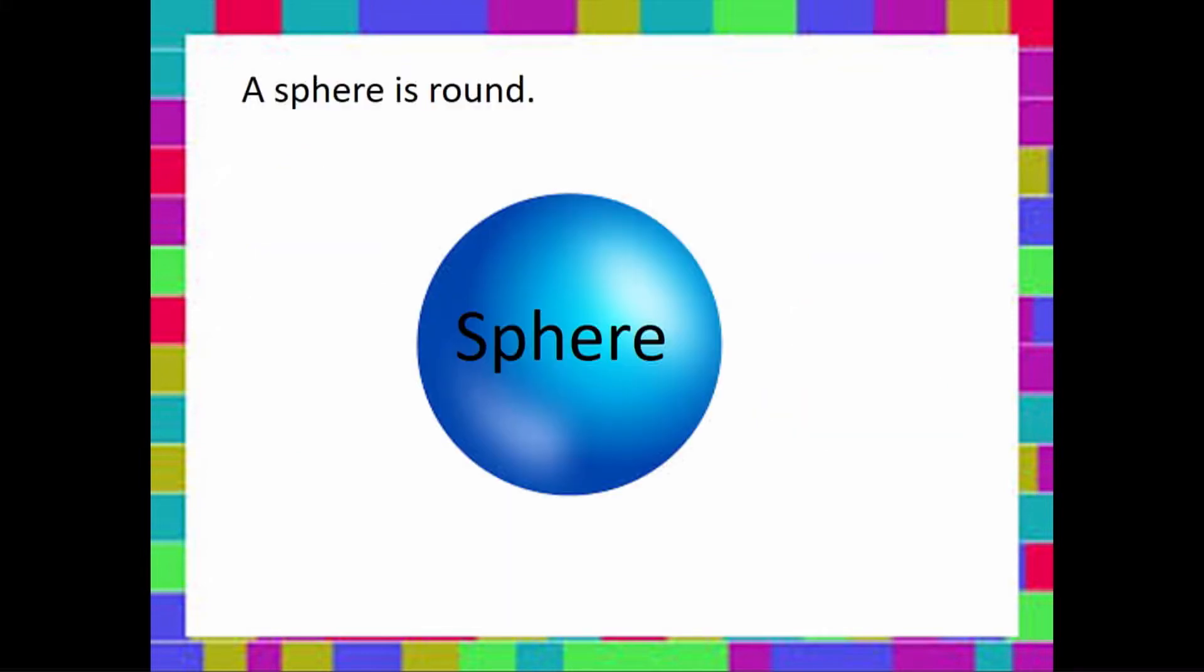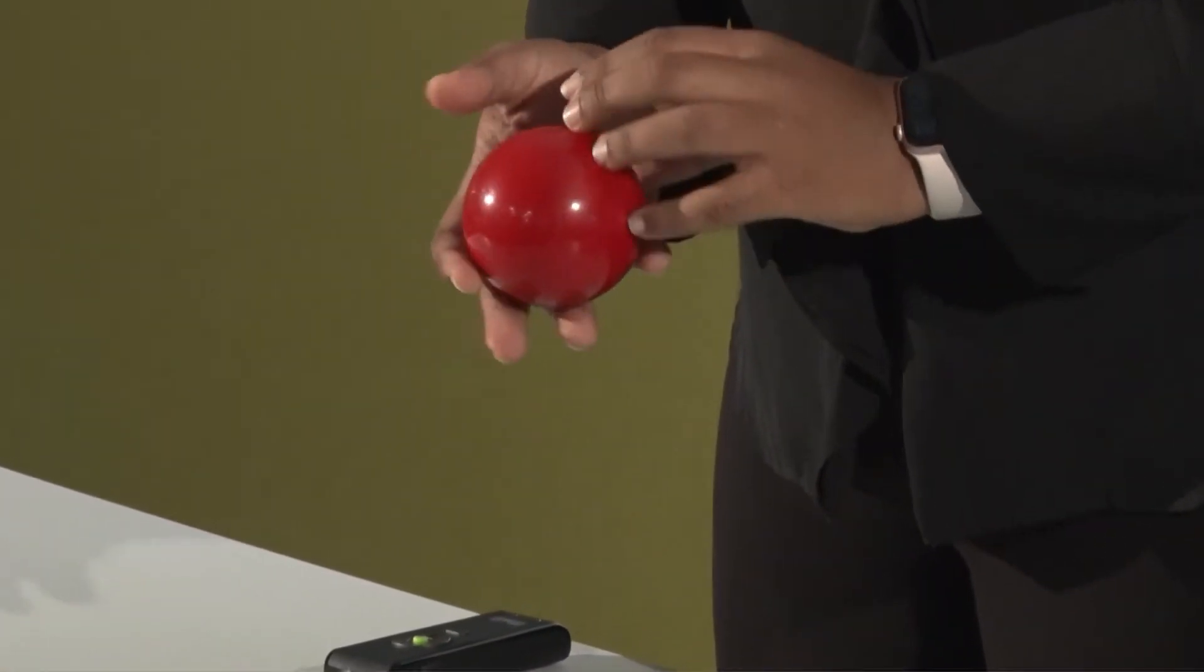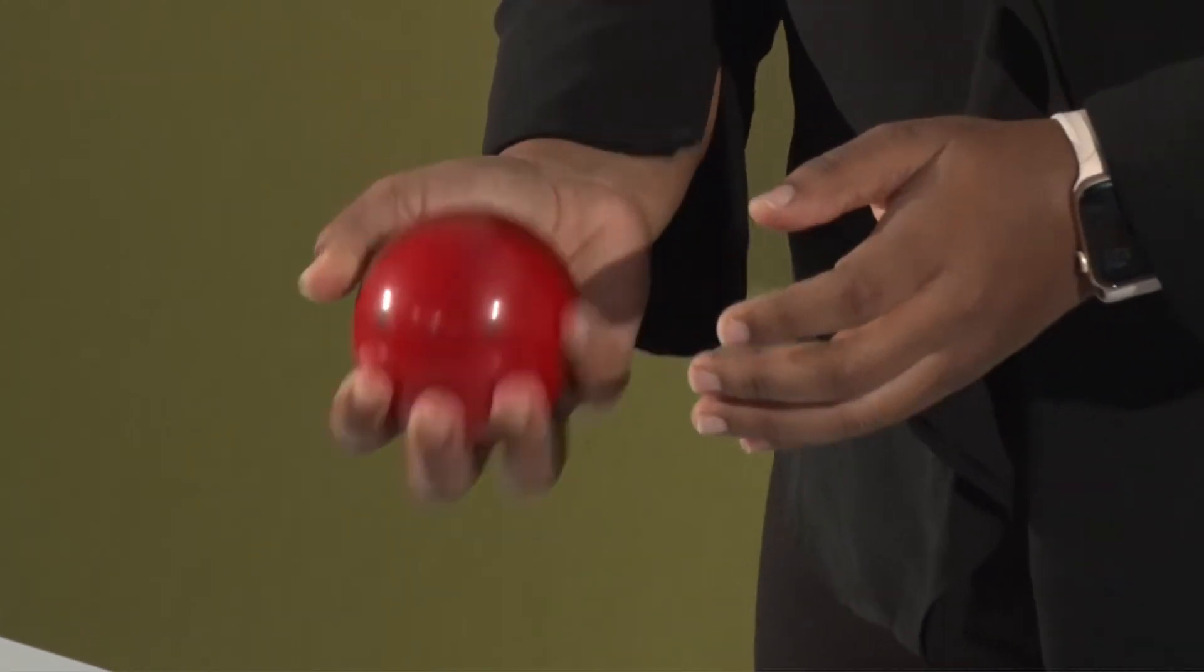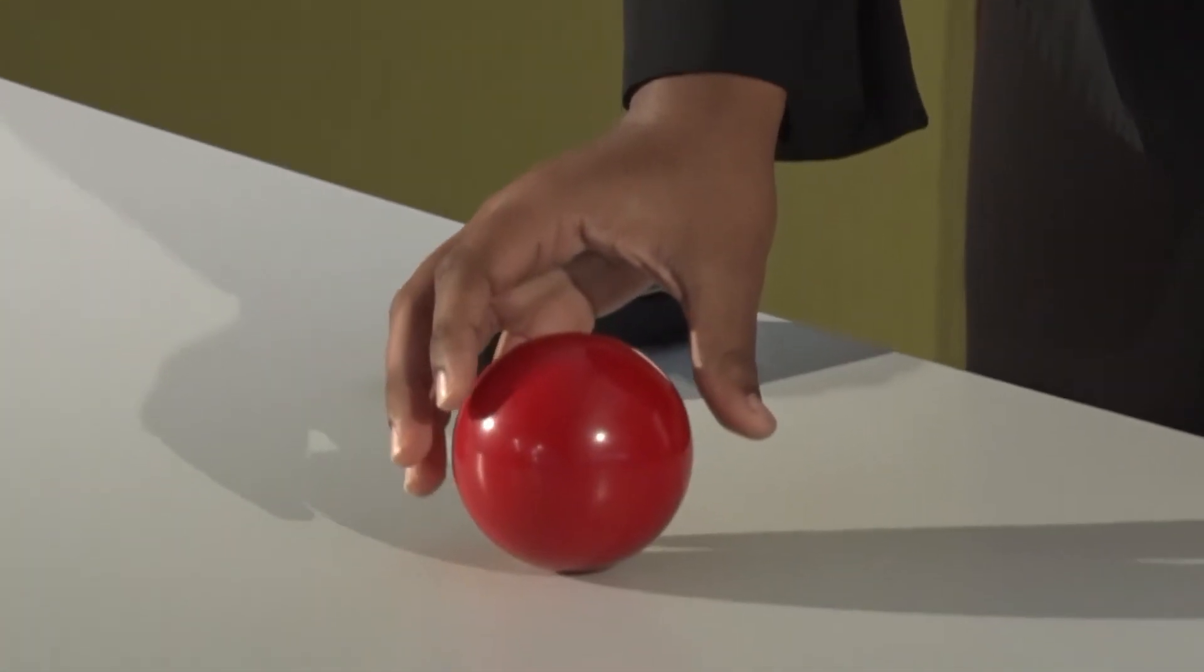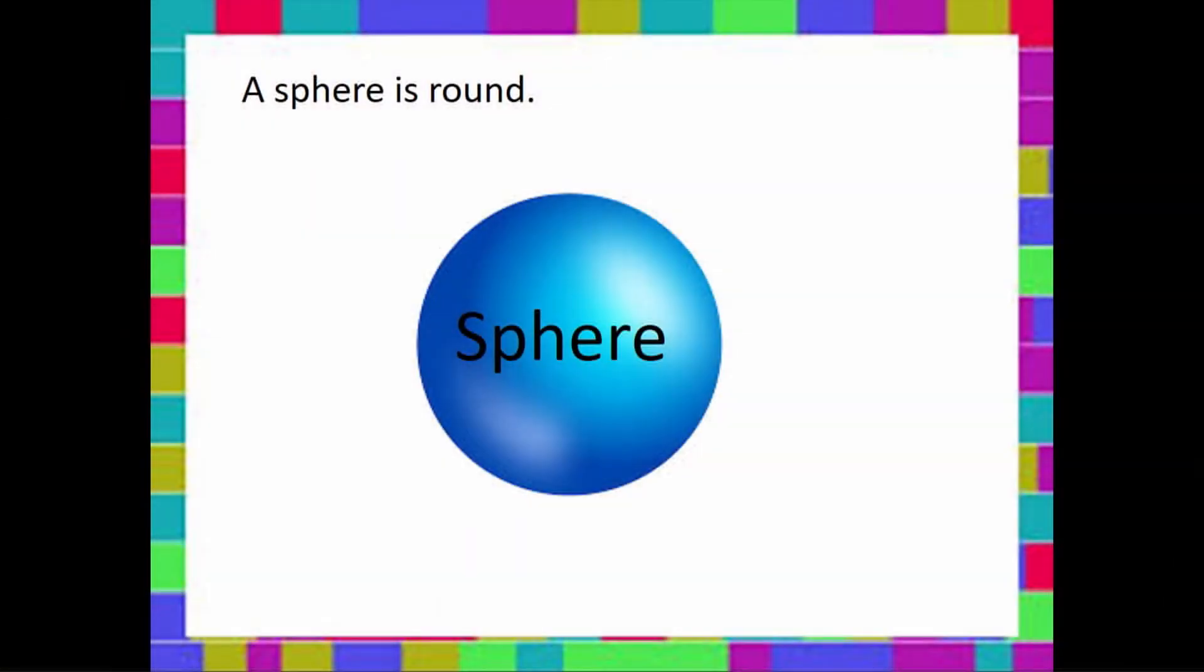Let's talk about our next shape. The next shape is a sphere, and a sphere is circular and round. Can you think of some things that are circular and round?